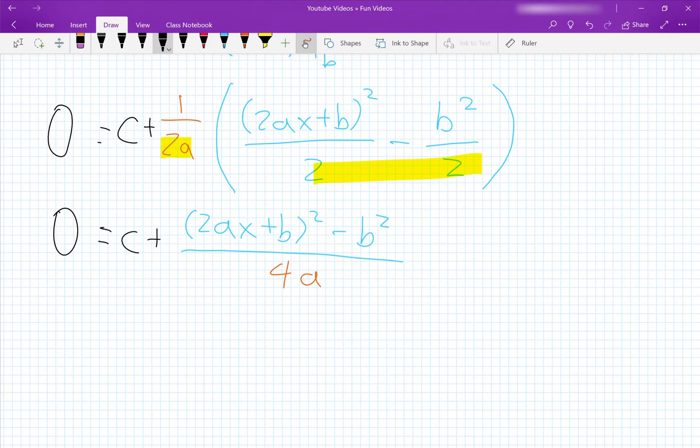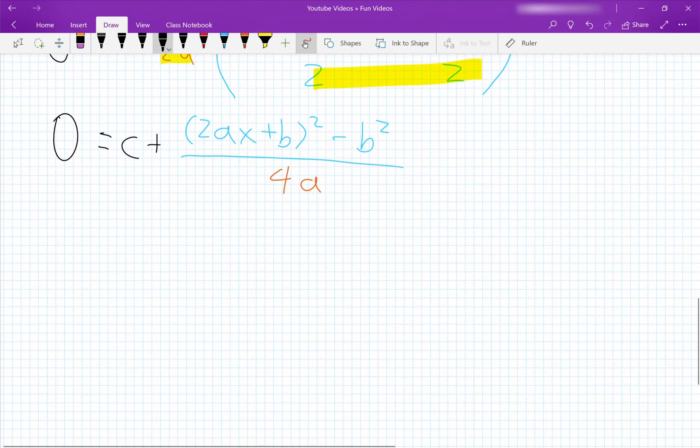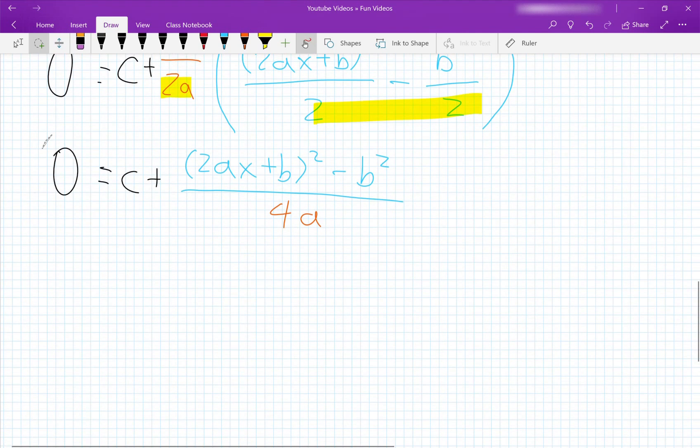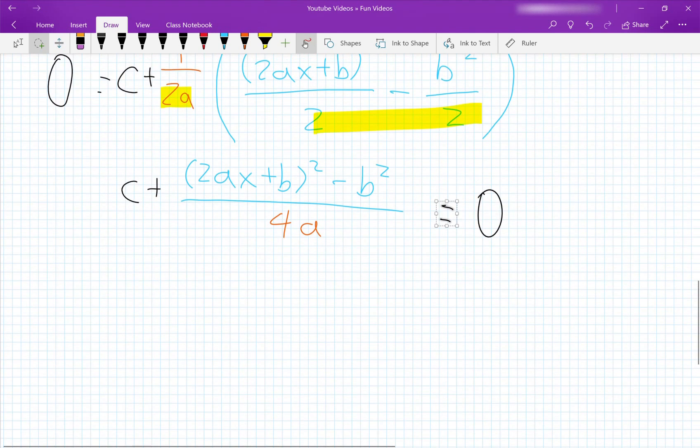So now we can start rearranging everything. We can subtract c from both sides and multiply it by 4a.